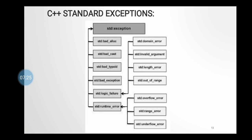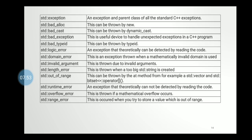C++ contains different types of standard exception classes. The std::exception is a standard exception class which includes many different exceptions, for example domain_error, length_error, out_of_range, and so on. This is the description about the standard exception classes.